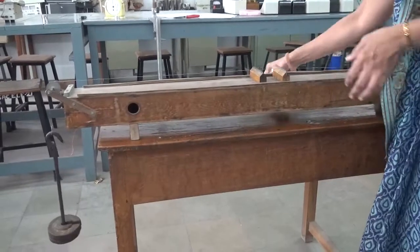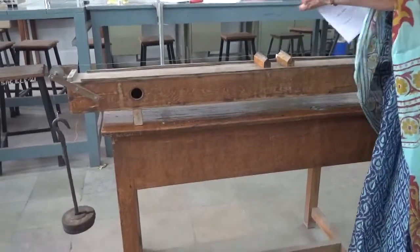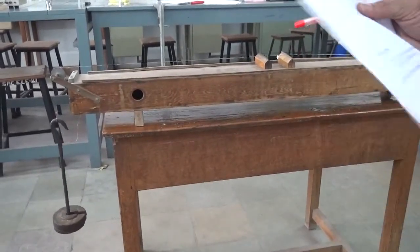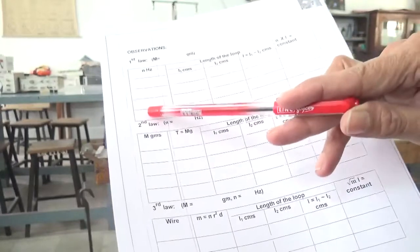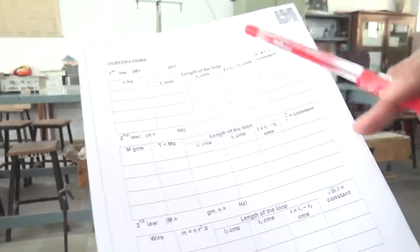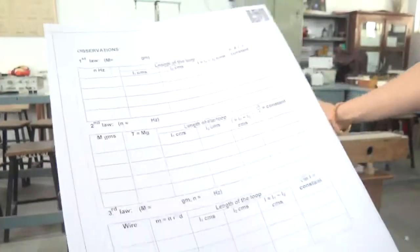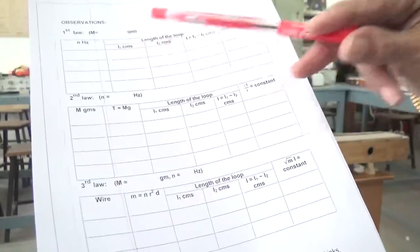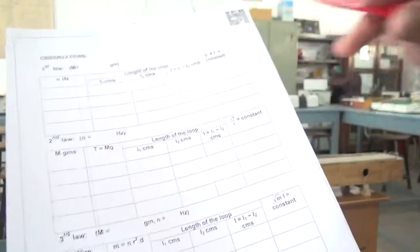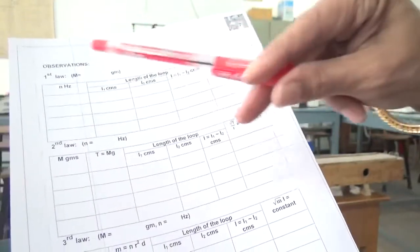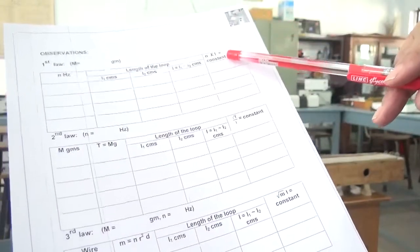This assignment consists of three laws that you have to verify. First law: keep the tension constant and vary the frequency. Take three different tuning forks - 480 hertz, 512 hertz, 426 hertz. In each case, find out the segment which is undergoing resonance. Take two trials and find the average. You have to show that n into L is constant - that is, frequency into the length of the segment remains constant when the tension T is constant.